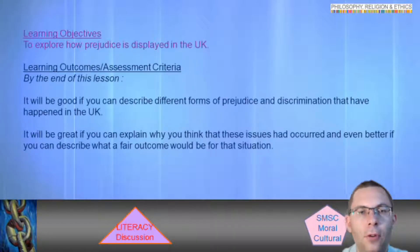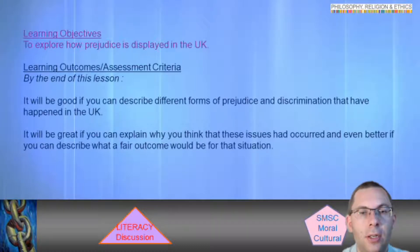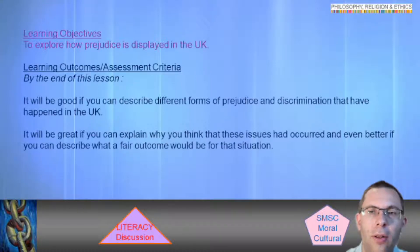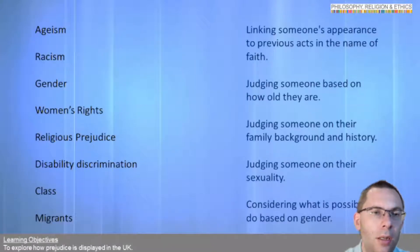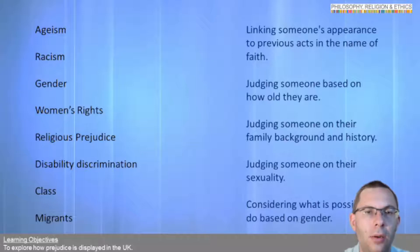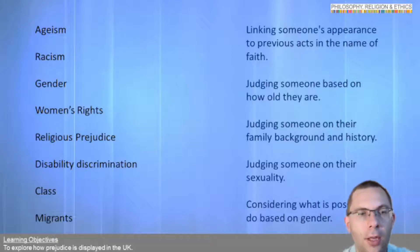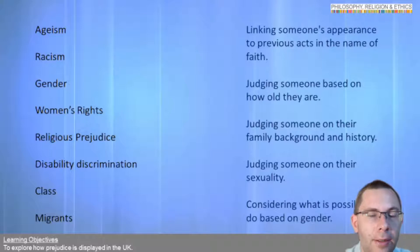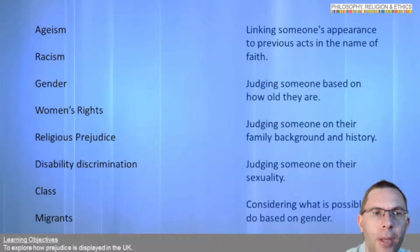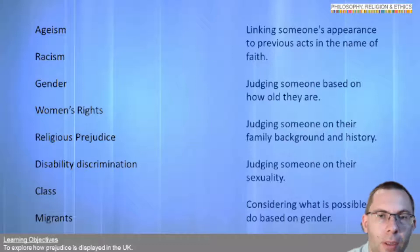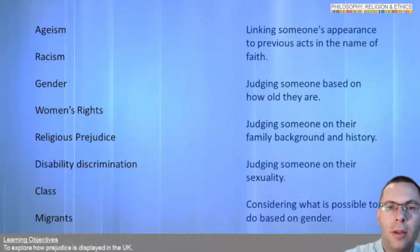It would be good if you can describe different forms of prejudice and discrimination — and you hopefully have a really big mind map about that. Great if you can explain why these situations occurred, and even better if you describe what a fair outcome would be. I'd like you to spend a few moments reflecting on that. Now I'd like you to come up with a definition of the words on the left, using only the matching ones on the right. There are five definitions but eight words, so not all words have definitions — see if you can work out which are the prejudices based on the meanings on the right. Pause me, write a few down, and I'll go through the answers with you in a moment.